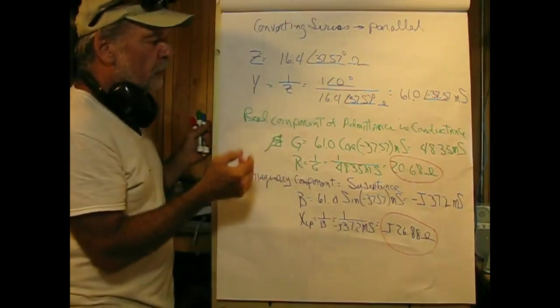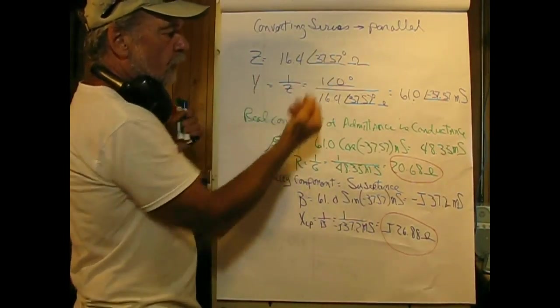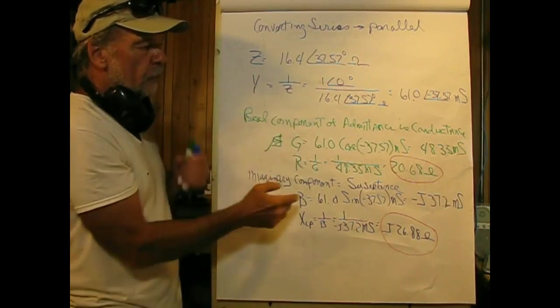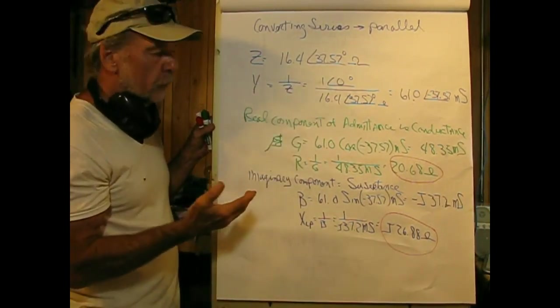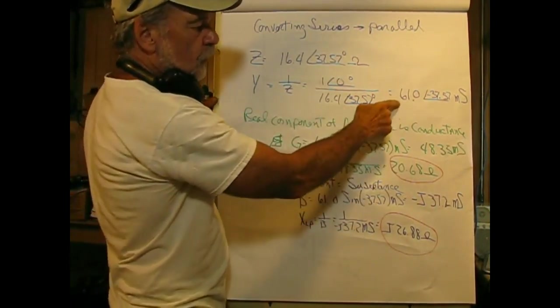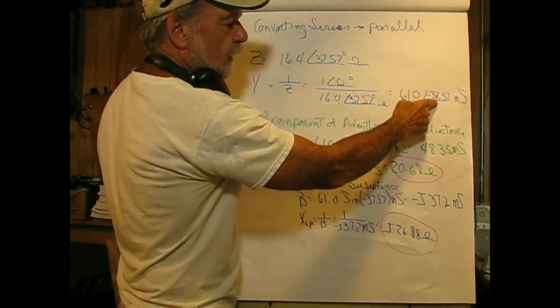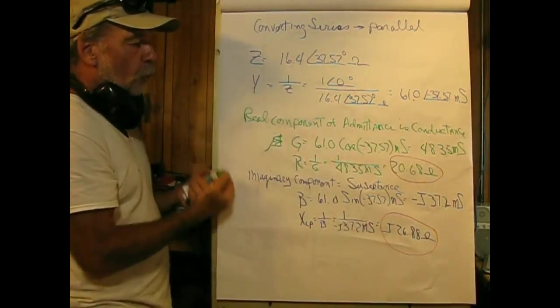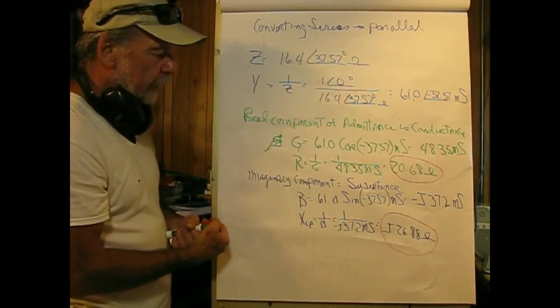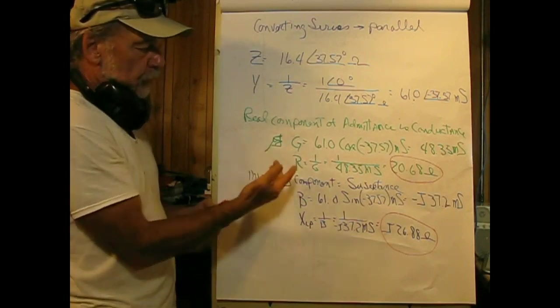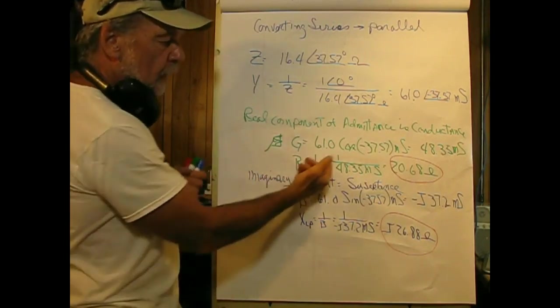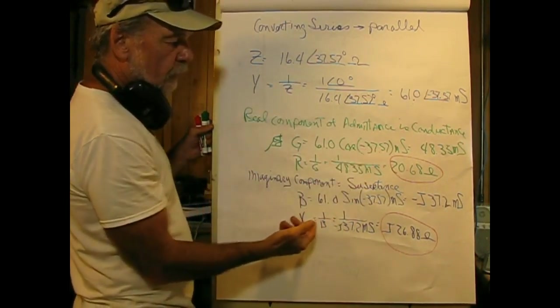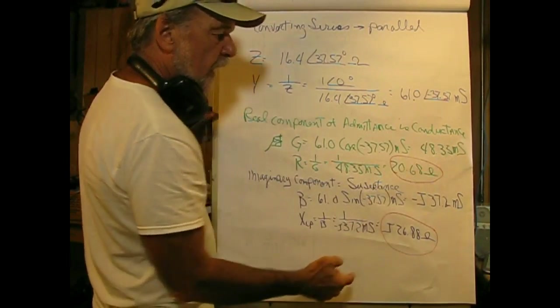Converting series to parallel, what we know from our previous calculations is the impedance was 16.4 at 37.57 degrees ohms. Now we'll find the admittance. Admittance equals the reciprocal of impedance. I'm just going to represent the numerator as 1 at 0 degrees and do the division. This comes out to 61.0 at negative 37.57 millisiemens. The real component of admittance is conductance, symbol G, and we'll do the standard thing to find the real part using the cosine operator. That equals the admittance times cosine of negative 37.57 degrees, which comes out to 48.35 millisiemens.